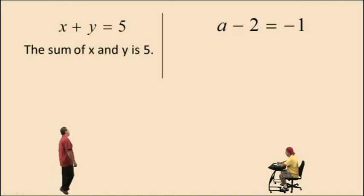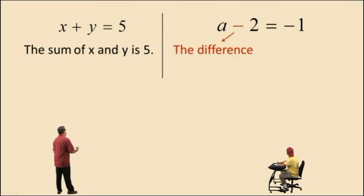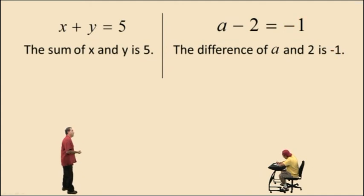Let's do another one. Here we have a subtract 2 equals negative 1. Well, this is the difference of a and positive 2 equals negative 1. Notice we say the difference of a and 2. When we say 2, it implies that it's positive 2.